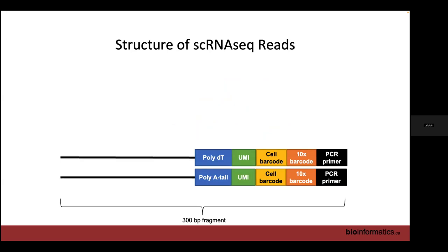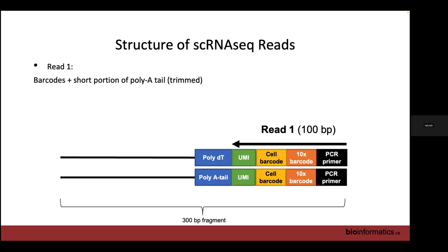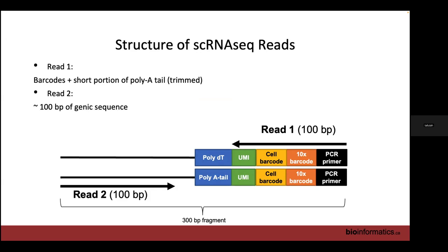So what do our reads look like? Here's our 300 base pair fragment. Because all our barcodes are attached to our poly-A tail via the poly-dT sequence, we only amplify these fragments that we can assign back to unique cells. All other fragments from a transcript can't tell us what cell they came from, so they're useless. Our first read captures all the barcodes and some poly-dT sequence, and our second read is 100 base pairs somewhere near the three-prime end of our transcript.